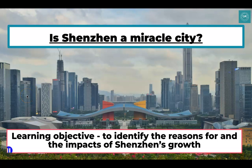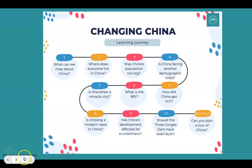Hello geographers and welcome to another lesson from the Changing China unit. In this lesson we're going to answer the question: is Shenzhen a miracle city? This is a major city in China and we're going to identify the main reasons for its growth but also the impacts of that growth. This lesson is number seven on our learning journey; we've already looked at China's geographical features, population changes, how China got rich, and the Belt and Road Initiative. We're now going to think about its urban growth.